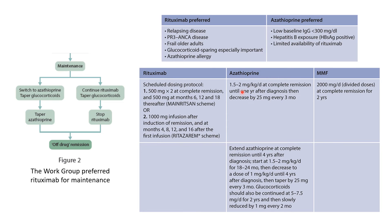For azathioprine dosing: use 1.5–2 mg/kg/day at complete remission until one year after diagnosis, then decrease by 25 mg every three months. For rituximab: 500 mg × 2 doses at complete remission, then 500 mg at months 6, 12, and 18 thereafter; or alternatively 1 g infusion after induction of remission, then at months 4, 8, 12, and 16 after the first infusion.